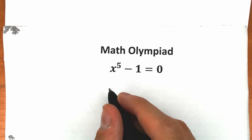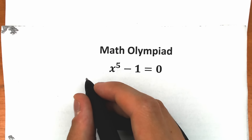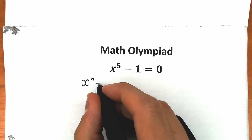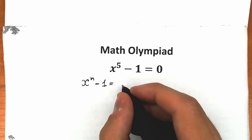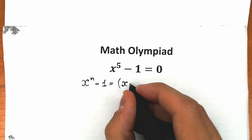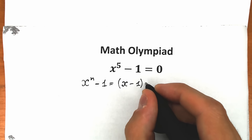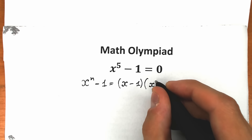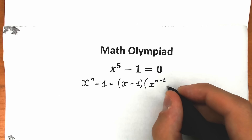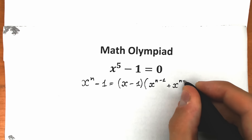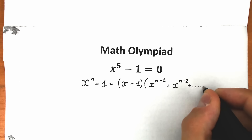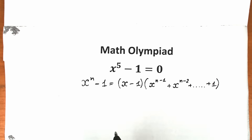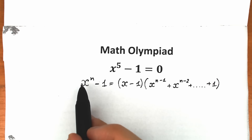First of all, we need to know a really great identity which helps us a lot. This identity looks like: if we have x to the power n minus one, this is equal to a product of x minus one times another parenthesis. In that parenthesis we have x to the power n minus one, plus x to the power n minus two, and so on, all the way until plus one at the end.